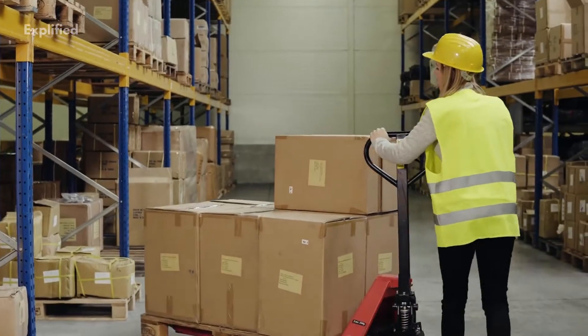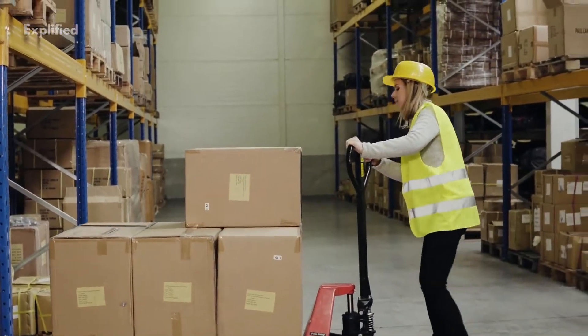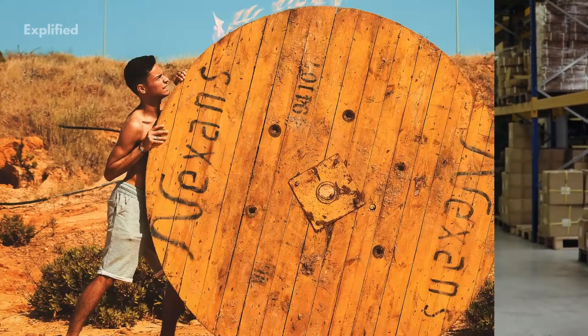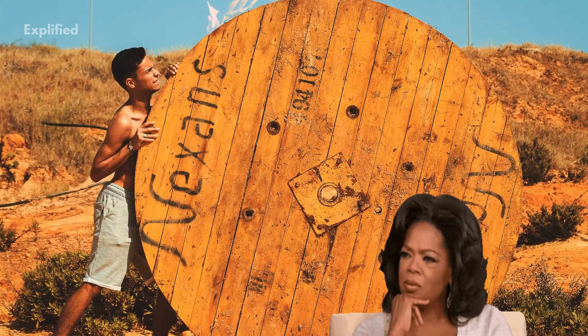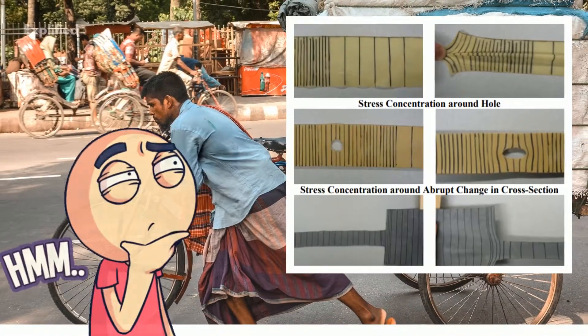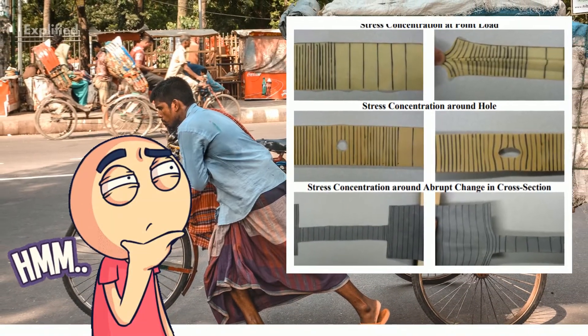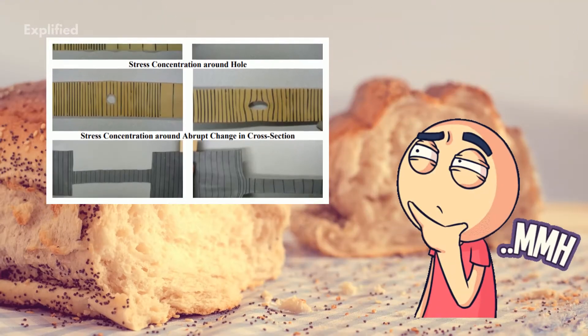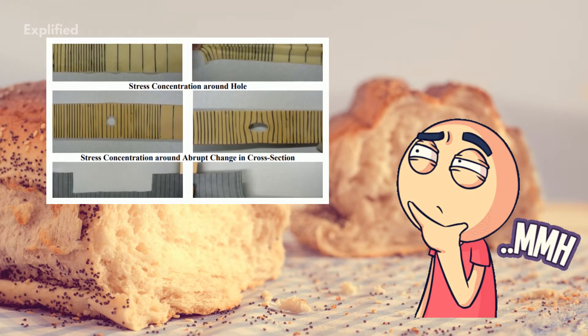Point loads on a surface lead to a stress concentration close to the point of application. A stress concentration is an increase in stress along the cross-section that may be caused either by such a point load or by another discontinuity such as a hole in the material or an abrupt change in the cross-sectional shape.